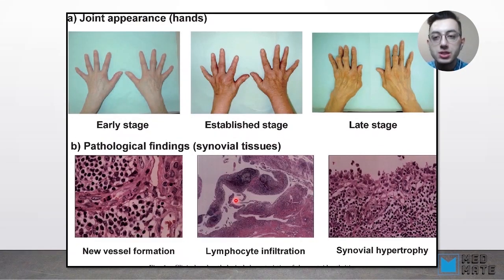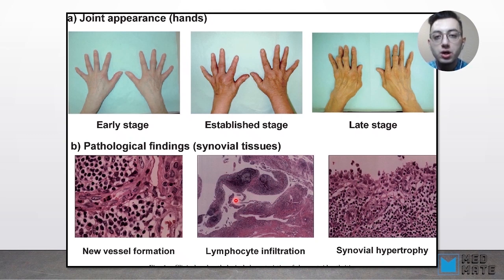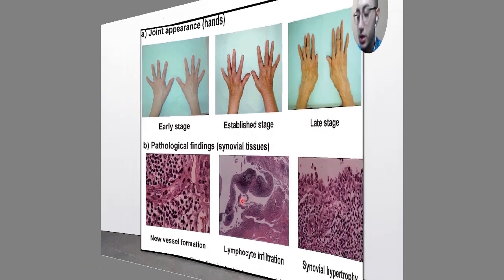Here we can see different stages of the disease. In the earliest stage, pathological findings show synovial tissue being vascularized with new vessel formation. In the established stage, lymphocyte infiltration leads to destruction of the synovial tissue. In the later stage, synovial hypertrophy causes malformation and destruction of the joint tissue.